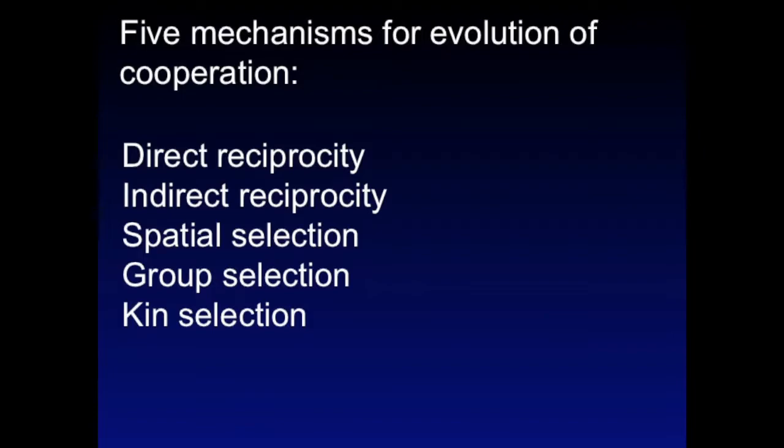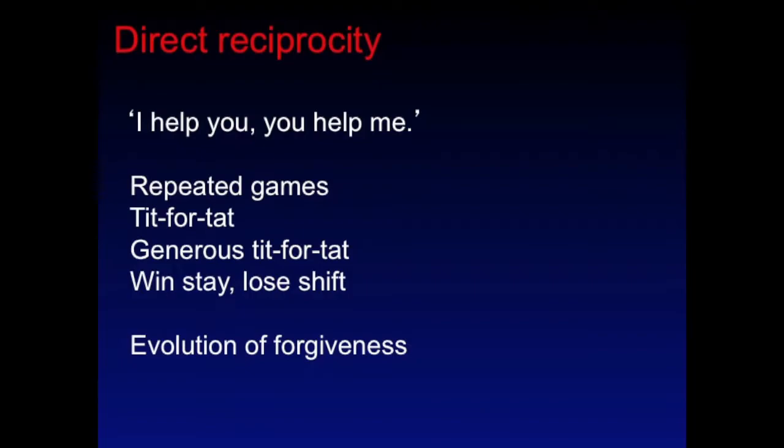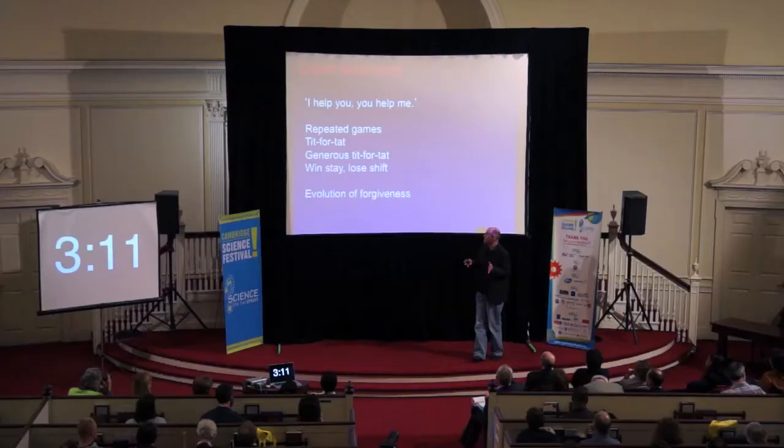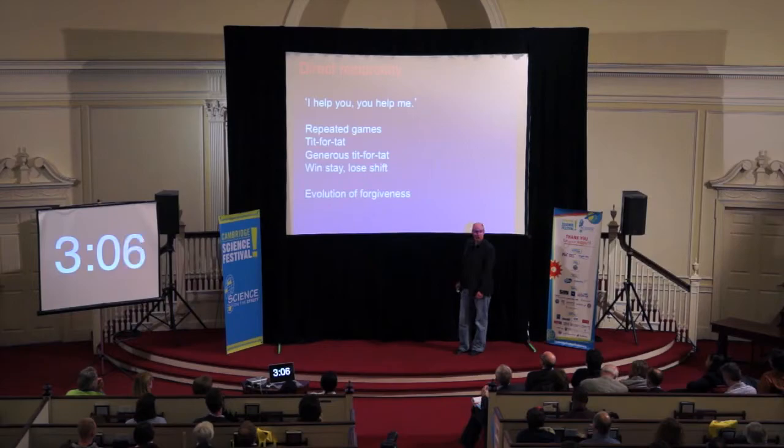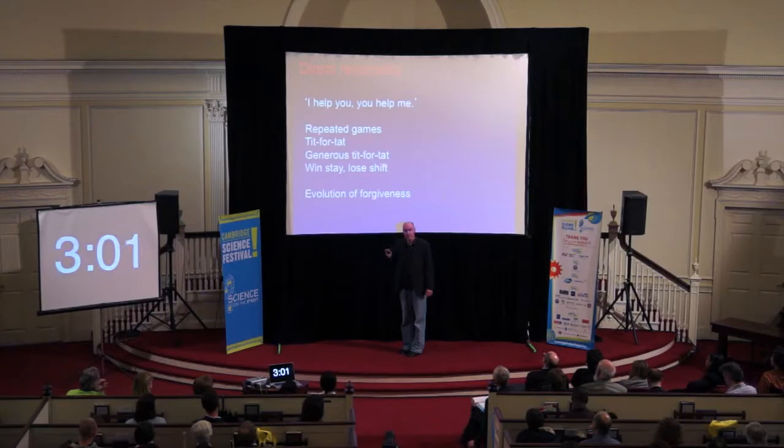Direct reciprocity is the simple idea: I help you, you help me. We have repeated interactions and we play strategies. In such a setting, cooperation can prevail over defection if we use something like tit-for-tat, generous tit-for-tat, or win-stay-lose-shift. In this area, you also discover the evolution of forgiveness. Natural selection prefers strategies that can forgive.